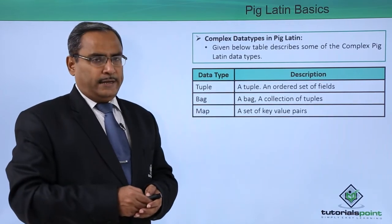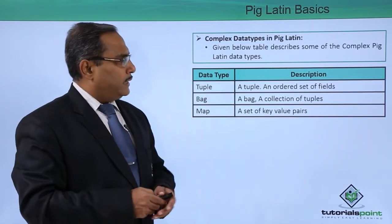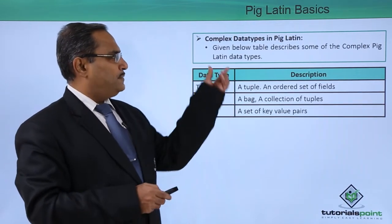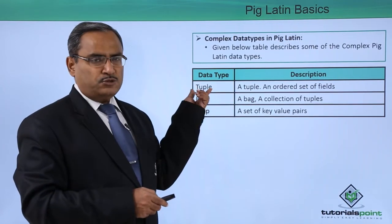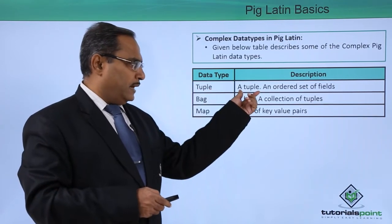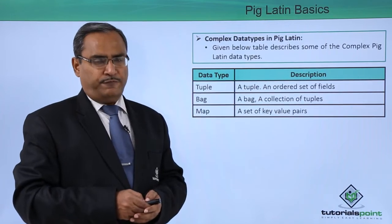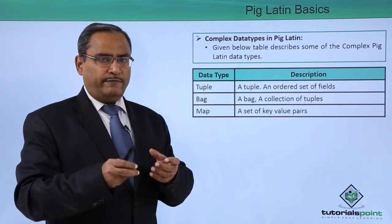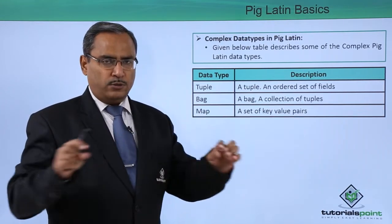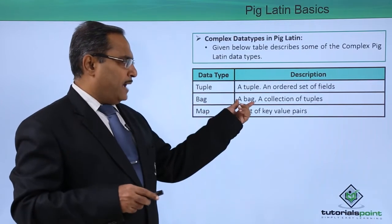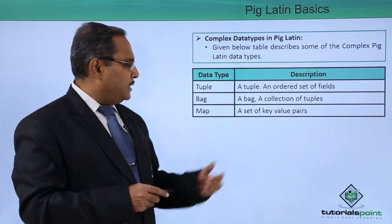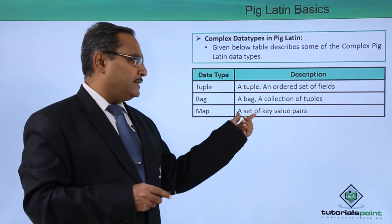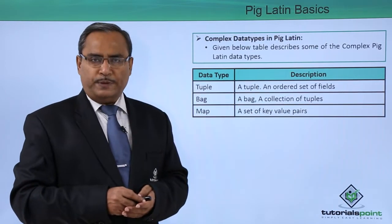Complex data types in Pig Latin. The table below describes some of the complex Pig Latin data types. First is tuple, which is an ordered set of fields. Fields contain values, and an ordered set of fields is known as a tuple. Bag is a collection of tuples. Map is a set of key-value pairs.